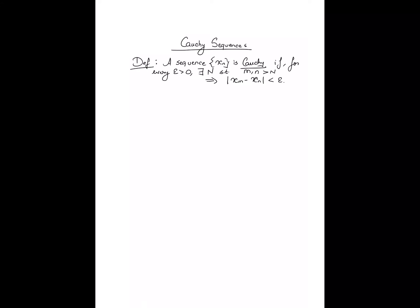A sequence is Cauchy if for any epsilon greater than zero there exists some threshold capital N such that any two entries of the sequence to the right of position capital N are within epsilon of one another. So a sequence is Cauchy if no matter how small a positive epsilon you pick, there exists a threshold N such that the entries of the sequence beyond that threshold are within epsilon distance of one another. Essentially, a sequence is Cauchy if its entries are progressively becoming closer to one another.